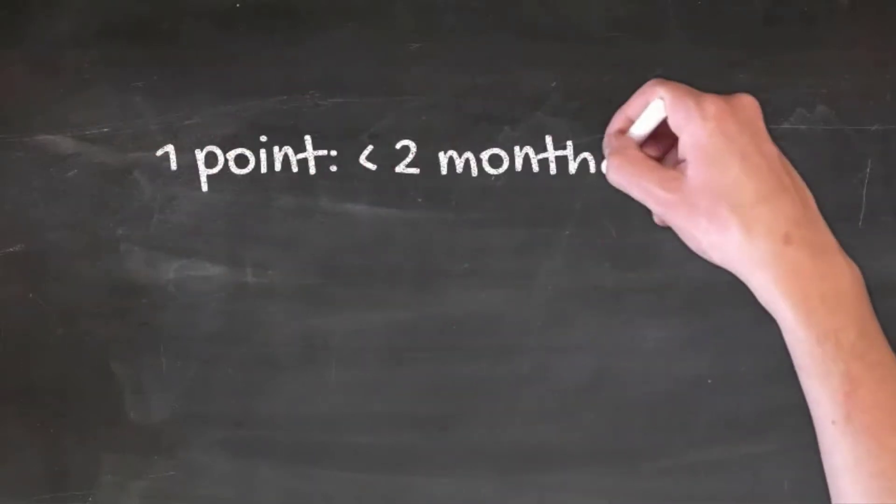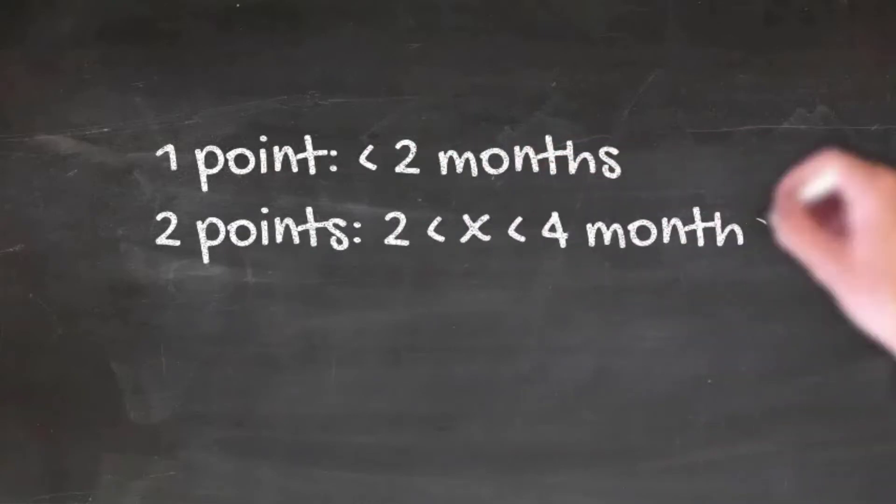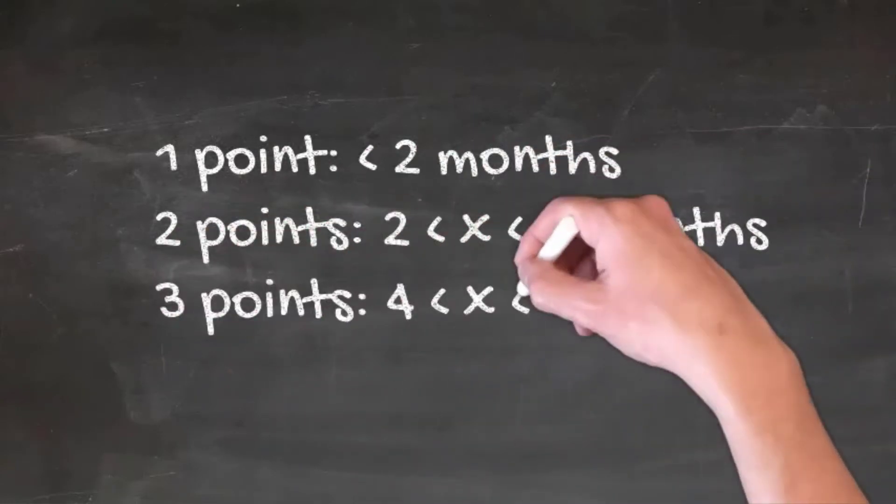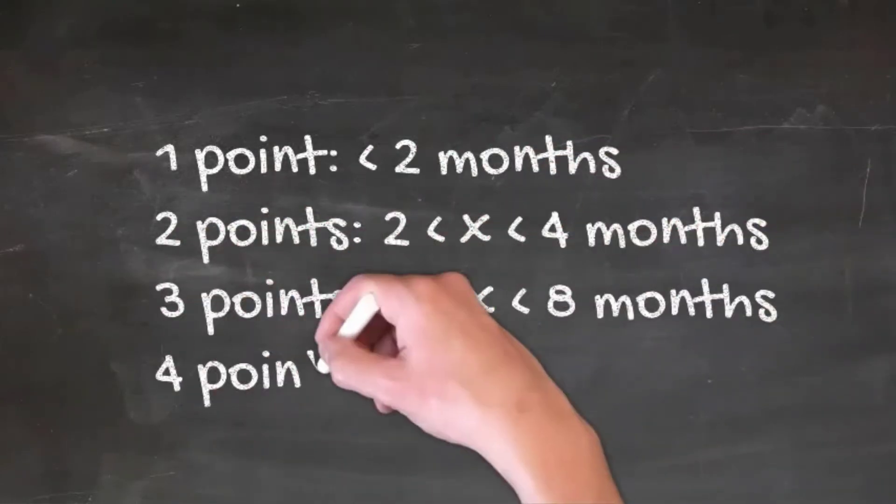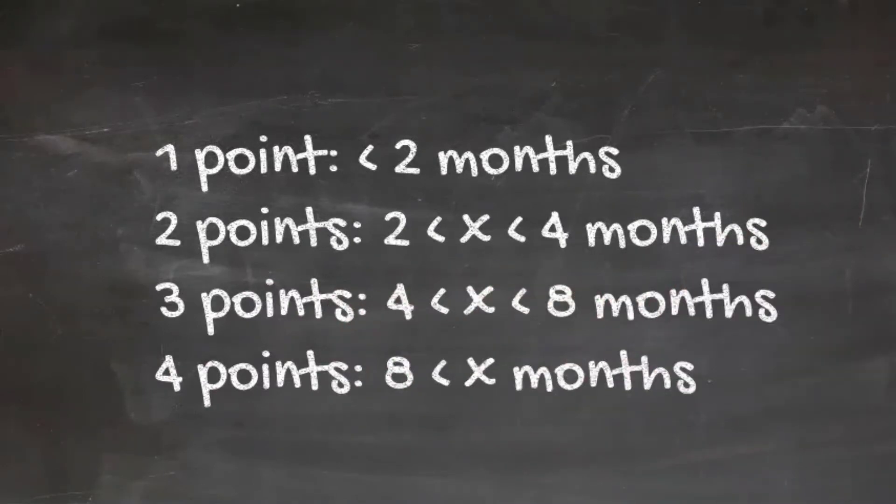You can also give duration a number or a point. And in the screen in front of you, you'll be able to see essentially what points are attributed to the different time frames.